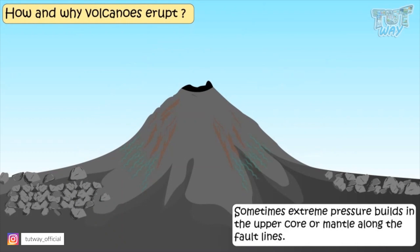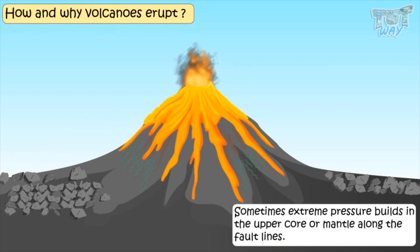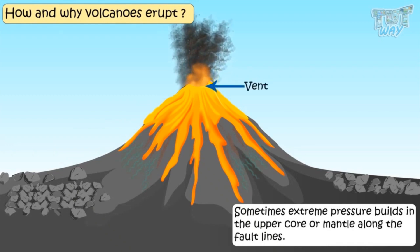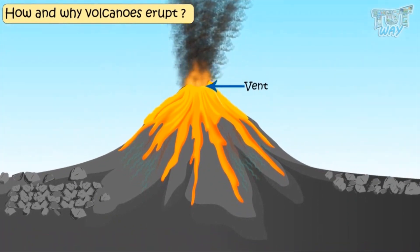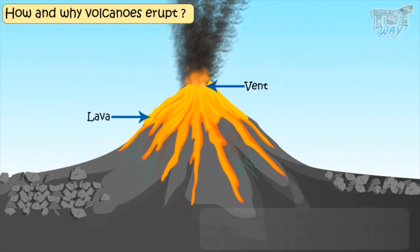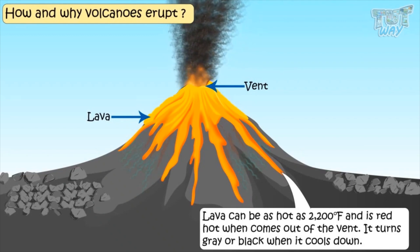Sometimes, extreme pressure builds up across the fault lines, and a sudden eruption occurs. Molten matter and ash comes out of the opening in the earth, which is called a vent. When the molten matter is still inside the earth, we call it magma, and when it comes out of the earth's surface, we call it lava. Lava can be as hot as 2,200 degrees Fahrenheit. It is red hot when it comes out of the vent, and turns gray or black when it cools down.